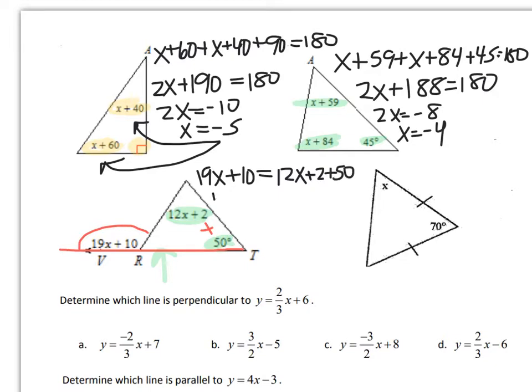So 19x plus 10 equals 12x plus 52. So 7x equals 42 and x equals 6.